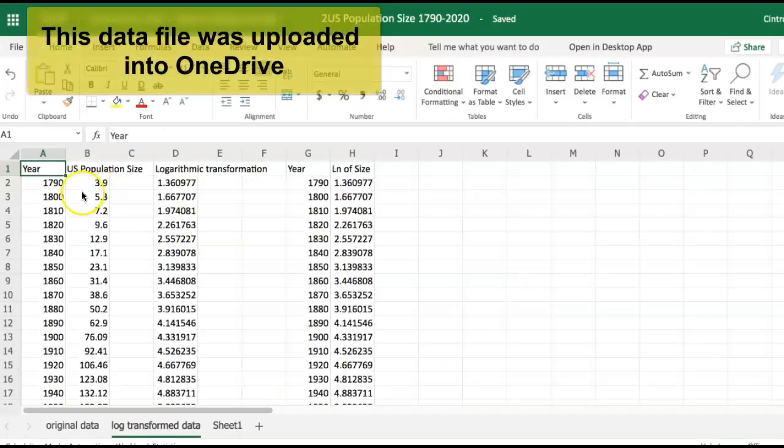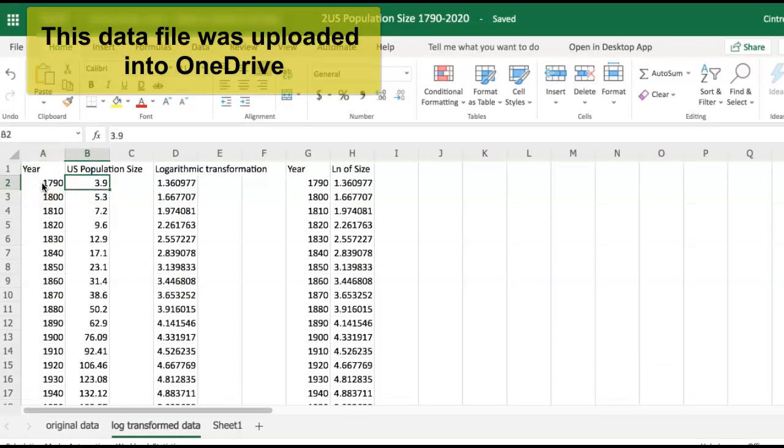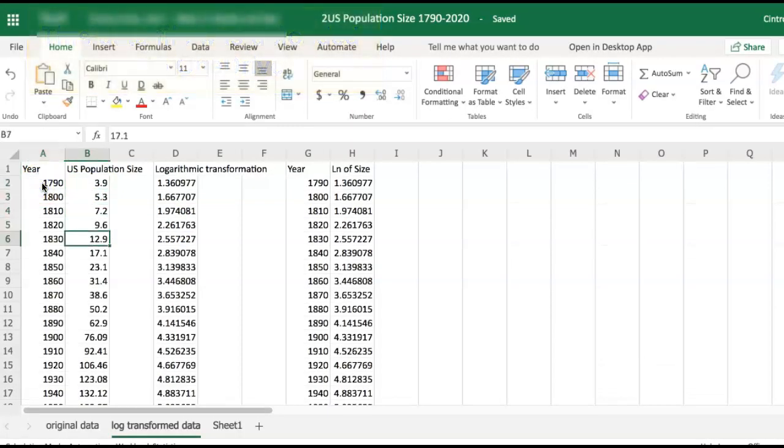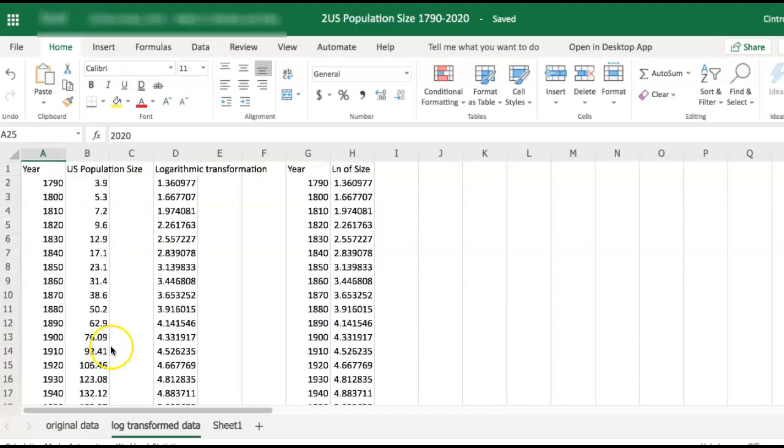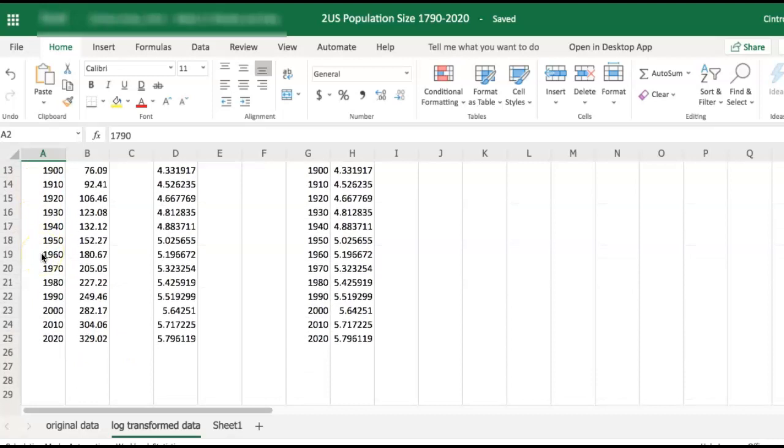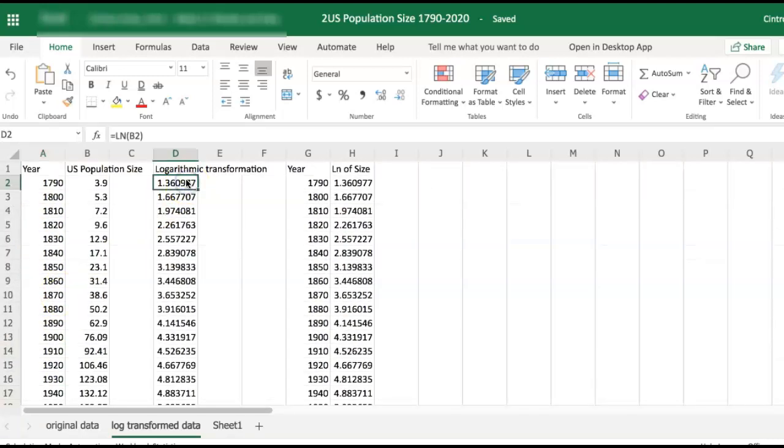So here we have the observations for the population size of the United States. You can see that in column B, these are measurements in millions. There are basically 25 data points from year 1790 all the way in increments of 10 years to the year 2020.